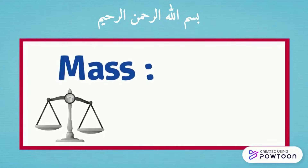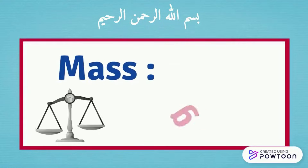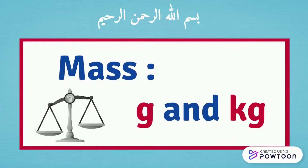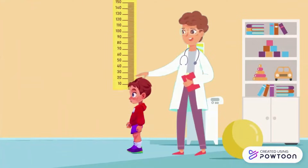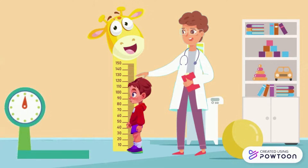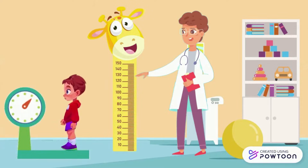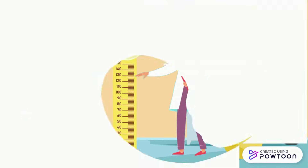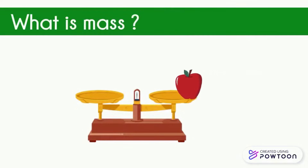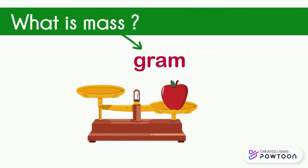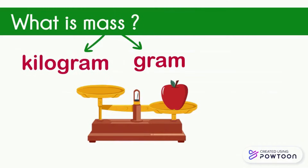In this video, we are going to talk about masses, the gram and the kilogram. When we go to the doctor, he takes our height and our weight, and tells us that our weight, for example, is 35 kilograms. Then we say that the doctor took our mass. So what is mass? Mass is how much an object weighs. Mass is expressed in grams or kilograms — gram and kilogram.